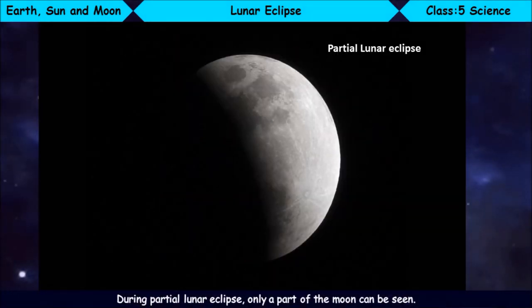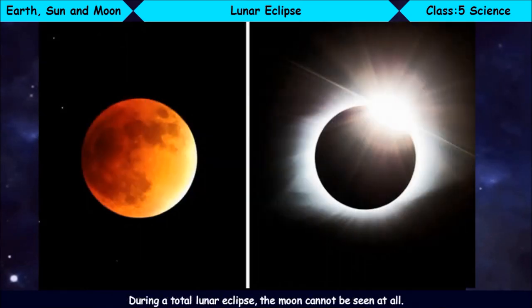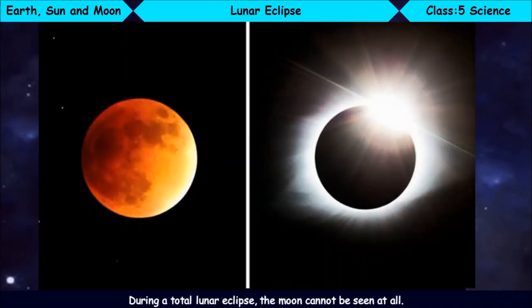A Lunar Eclipse may be partial or total. During a partial lunar eclipse, only a part of the Moon can be seen. During a total lunar eclipse, the Moon cannot be seen at all.